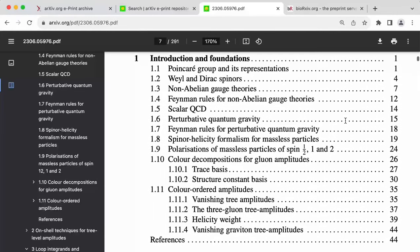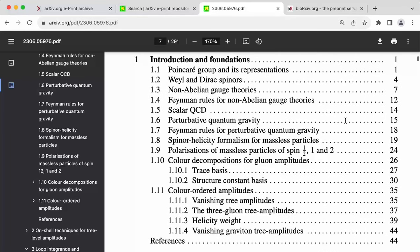So the next thing you do is you go through the table of contents. So let's look at this introduction and foundations. And then the first section starts talking about something called the Poincaré group and its representations. Now, if you have no idea what's going on here, that means you need to close this paper and go back to studying group theory.